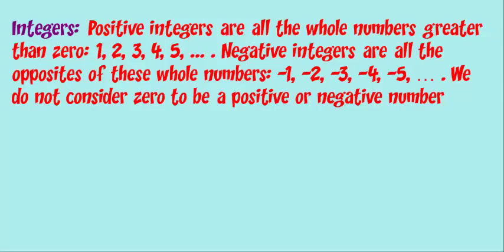Integers: positive integers are all the whole numbers greater than zero, such as one, two, three, four, five. Negative integers are all the opposites of these whole numbers — negative one, negative two, negative three, negative four, negative five, and so forth. We do not consider zero to be a positive or a negative number.